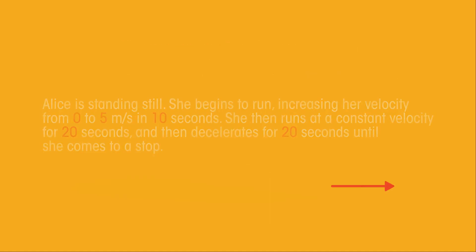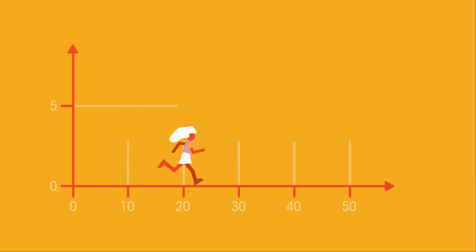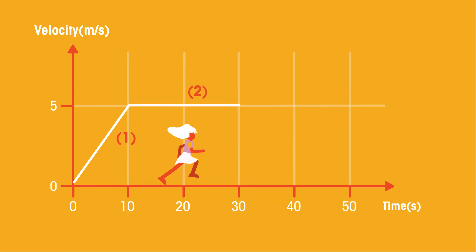Did you get it right? We started by drawing a diagonal line that goes from 0 to 5 meters per second on the velocity axis, and from 0 to 10 seconds. Then, because she runs at a constant velocity of 5 meters per second, you should have a horizontal line at 5 meters per second from 10 seconds to 30 seconds. And then, we end by drawing a downwards diagonal line from 5 meters per second to 0 meters per second, and from 30 to 50 seconds, to show her de-accelerating.